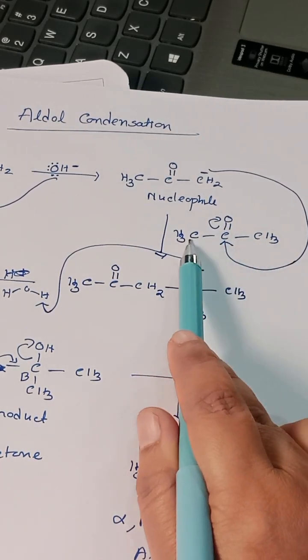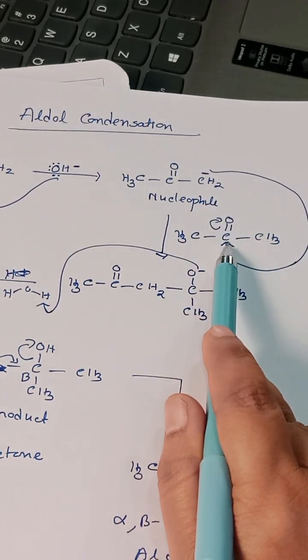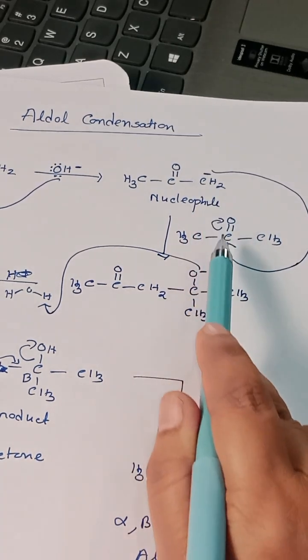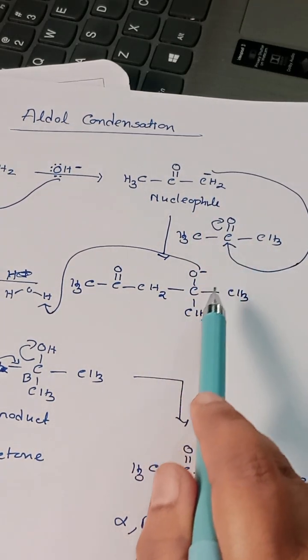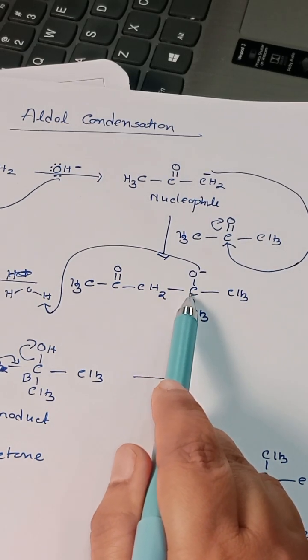This is the carbonyl carbon of another acetone molecule. CH2- attacks the electrophilic carbonyl carbon. Here you can see this CH2- and carbonyl carbon making a new bond, so a new carbon-carbon bond is forming due to aldol condensation.